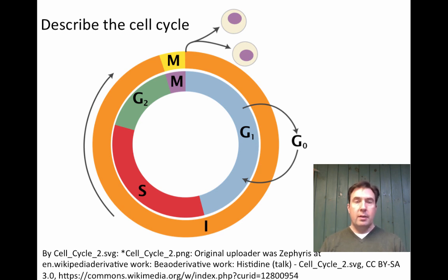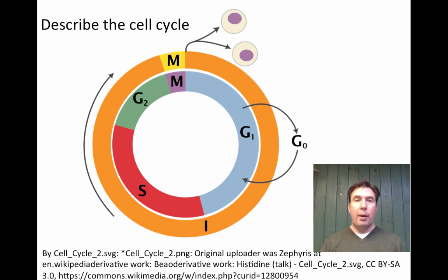G1 is a growth phase — after mitosis, the cell grows. S phase stands for synthesis, which is when DNA is duplicated and other metabolic processes occur; the most important event leading into mitosis is DNA replication to double the amount of DNA. G2 phase is the final growth phase, preparing the cell for M phase. M phase is mitosis — the actual cell division.